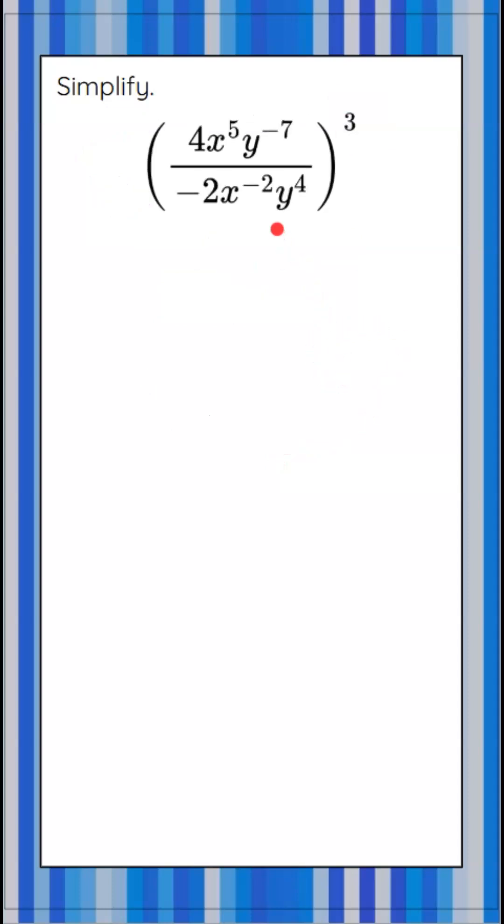Now let's look at this. The next thing we want to do is clear the negative exponents inside the parentheses. So y to the negative 7th is going to the reciprocal location, which is to the denominator. And x to the negative 2 is going to go to the reciprocal location, the numerator. Let's rewrite that.